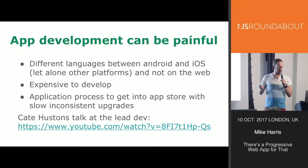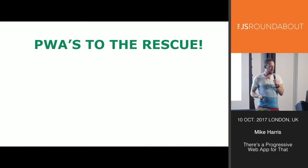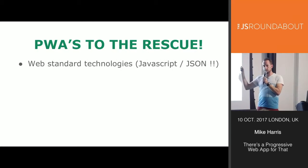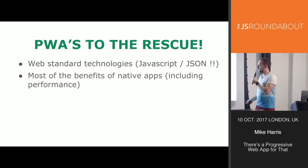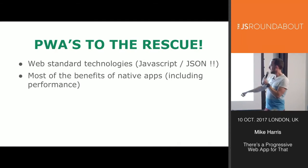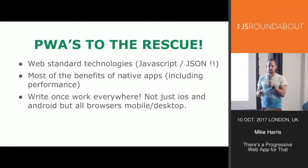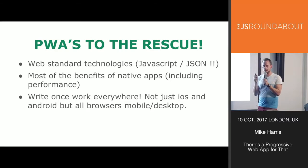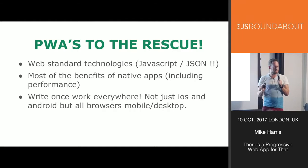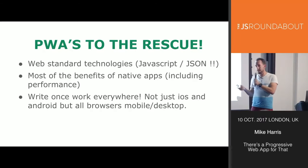Anyway — progressive web apps to the rescue! This is JavaScript Roundabout, so one of the best things about progressive web apps is it uses web standard technology. It uses JavaScript — yay, thank God I talked about JavaScript at a JavaScript meetup. It's got most of the benefits of native apps, including performance. Write once, work everywhere. Everyone's hopefully building responsive websites — you just build it once and it should work everywhere. You have one team, maybe a few tweaks for mobile, and yeah, you still have to test on IE8 and IE9, but let's ignore that for a moment.